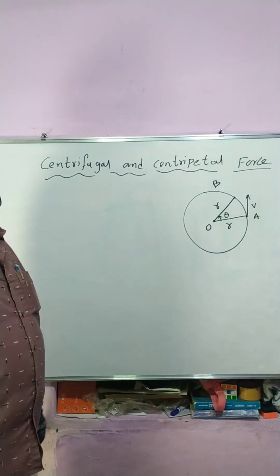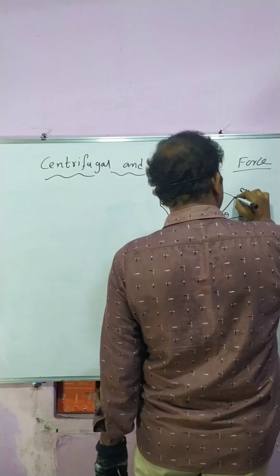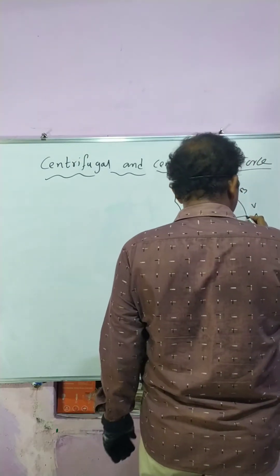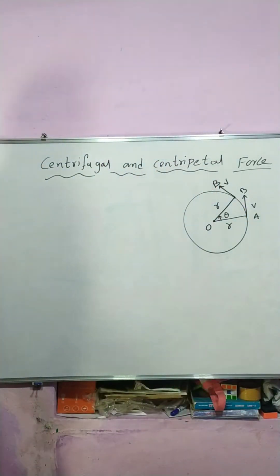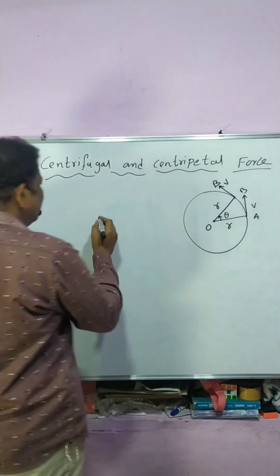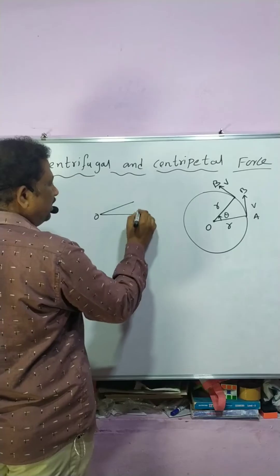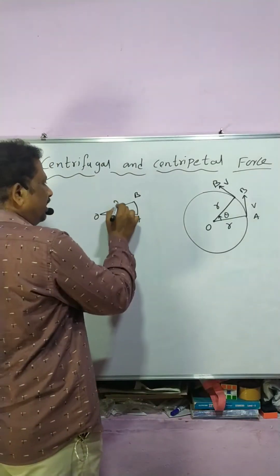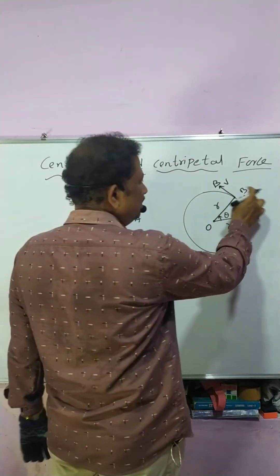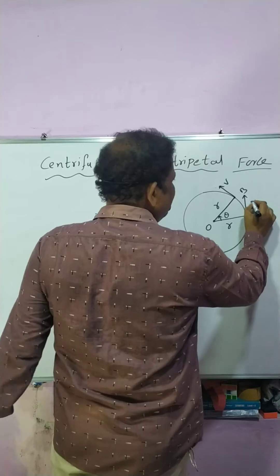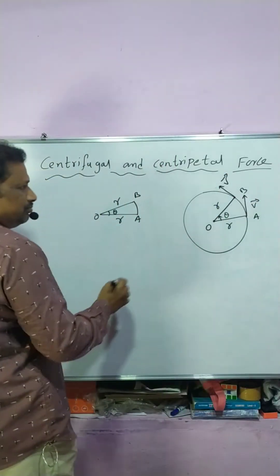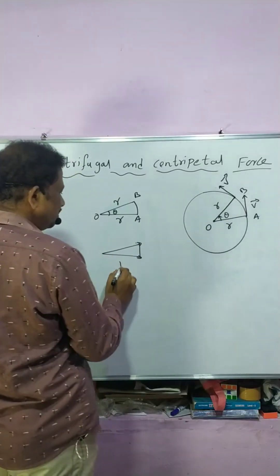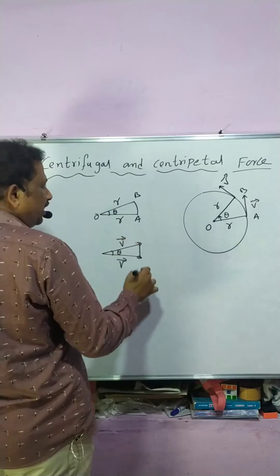The angular displacement is theta. The velocity at point B is also V — it is a tangential velocity to the circle. Now, observe triangle OAB, where the angle between the two radius vectors is theta. If we join the two velocity vectors V, these two vectors also form the same angle theta. So these two triangles are similar triangles.